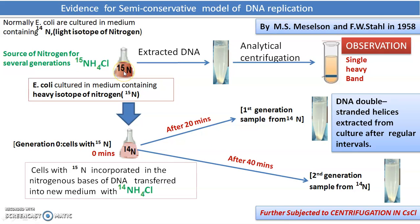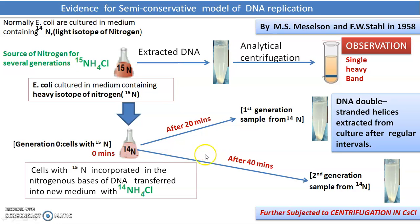They collected samples of N15-incorporated E. coli cells and recultured them in fresh N14 medium. At zero minutes (generation zero), all cells had N15. After 20 minutes, E. coli completes one generation, so they collected the first generation sample and extracted and purified the DNA. They waited another 20 minutes — 40 minutes total from the start — and collected the second generation sample.